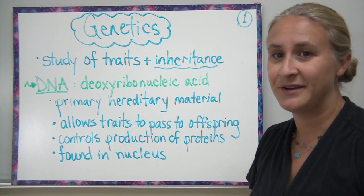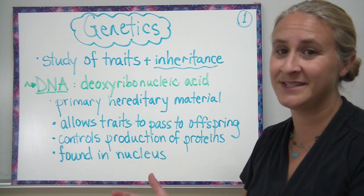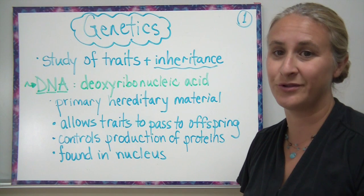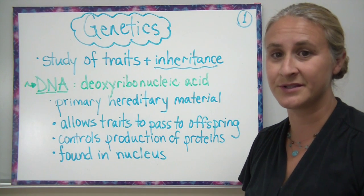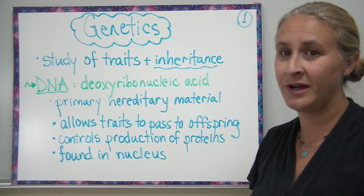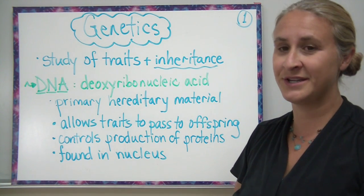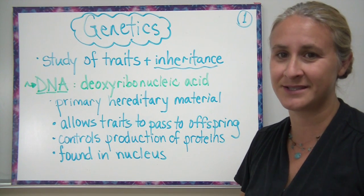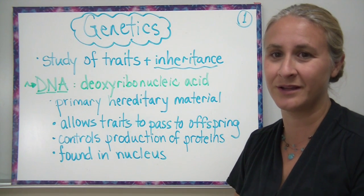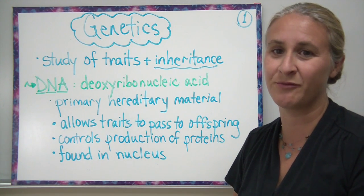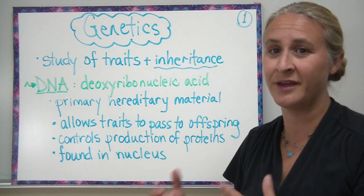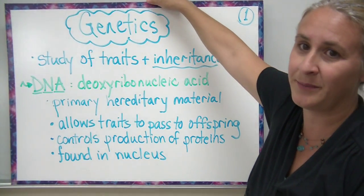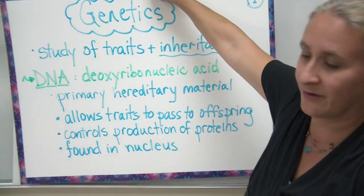DNA is found in the nucleus. If the DNA does happen to leave the nucleus and the nucleus is destroyed, then our hereditary information can become destroyed and that cell will more than likely go through some sort of programmed death. So DNA remains in the nucleus, and we're going to see how that becomes important later on.